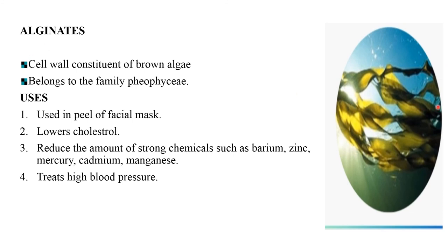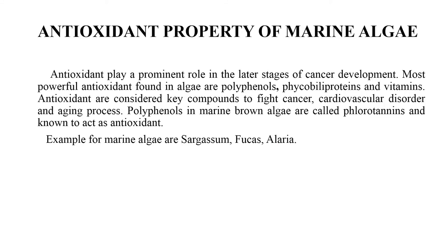Alginate is present in the cell wall constituent of brown algae, belonging to the family Phaeophyceae. It is used in face peel masks, lowering cholesterol, and reducing the amount of strong chemicals such as barium, zinc, mercury, cadmium, and magnesium. It also helps treat high blood pressure.